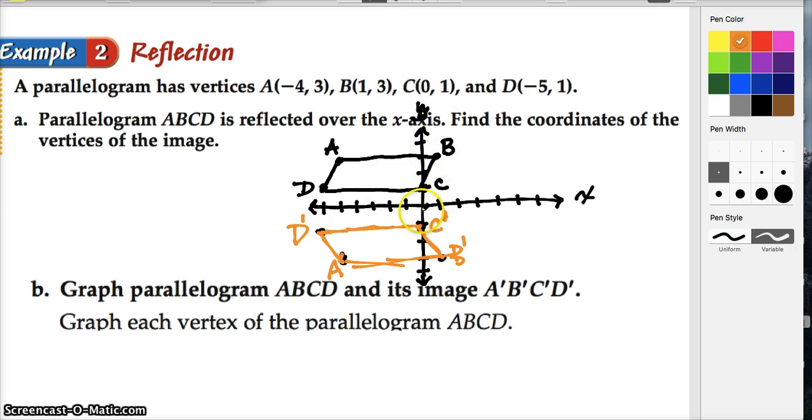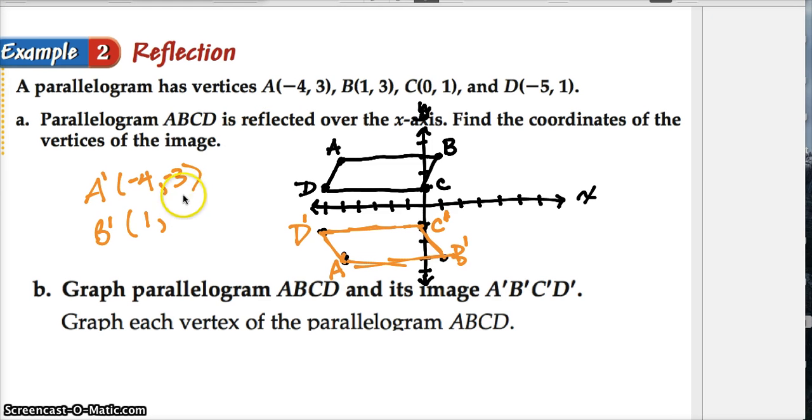Now let's think about the coordinates of it. The coordinates of C, let's start with C, is (0, 1). The coordinates of C prime would be (0, -1). Look at what's happening. The coordinates of B is (1, 3), right? The coordinates of B prime is (1, -3). What's happening? Notice that when we do a reflection over, in this case, the x-axis, we're going to be changing only the y value. So A prime has a coordinate pair of (-4, -3). You see, we're changing the sign of the y value.